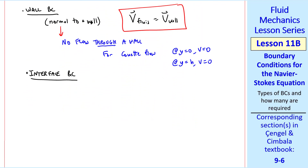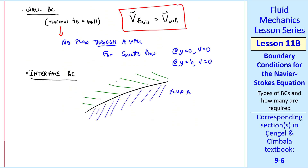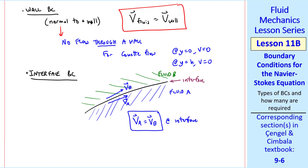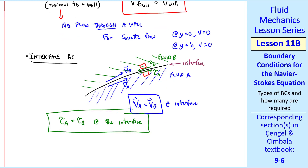Now let's talk about an interface boundary condition. Suppose we have fluid A interfacing fluid B at an interface. The velocity vectors vA and vB must be equal at the interface, similar to what happens at a wall. If we think of fluid elements right at the interface, shear stress tau on the top face of the lower element is tau A, and tau B is the shear stress at the bottom of the top element. Since these two particles are rubbing against each other, tau A must equal tau B at this interface — they're equal but opposite because of the way we define shear stress. A positive shear stress at the top is to the right, and at the bottom of a particle a positive shear stress is to the left.